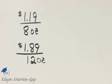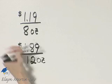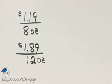The unit price for the 8-ounce size, first of all I'll write $1.19 divided by 8 ounces. That is that rate written as a fraction, and then the other we were given $1.89 for 12 ounces.